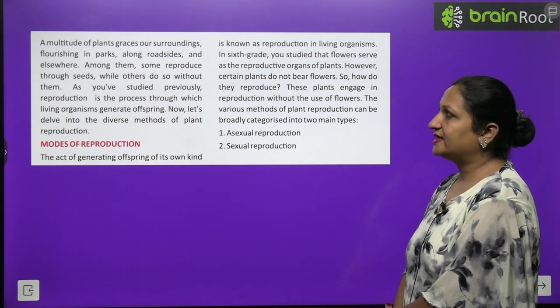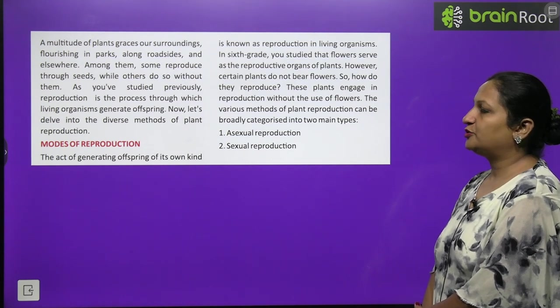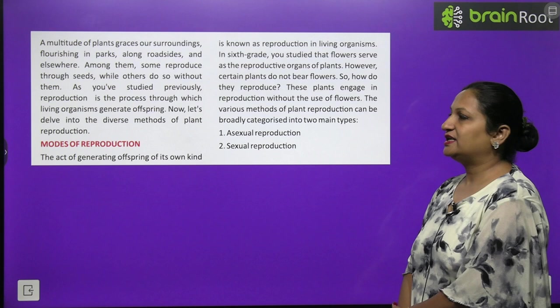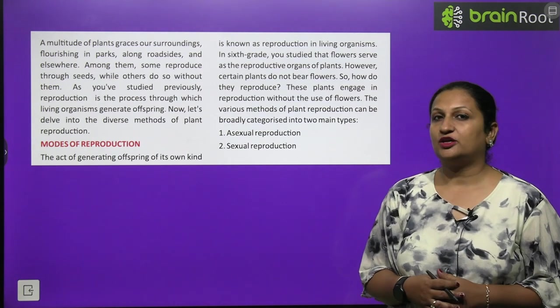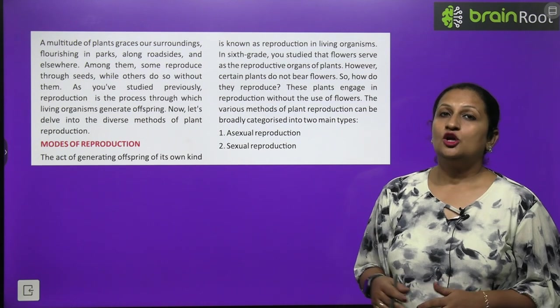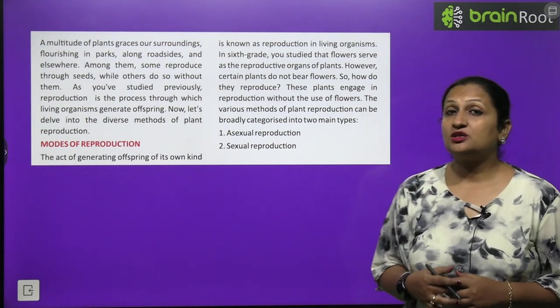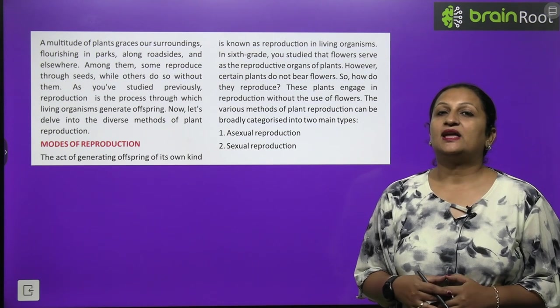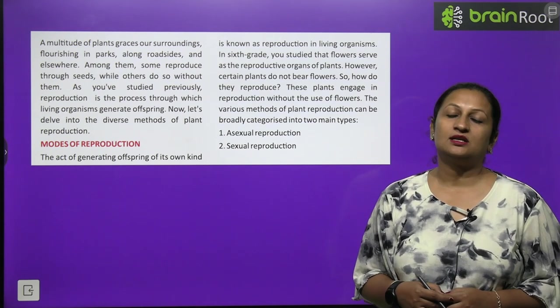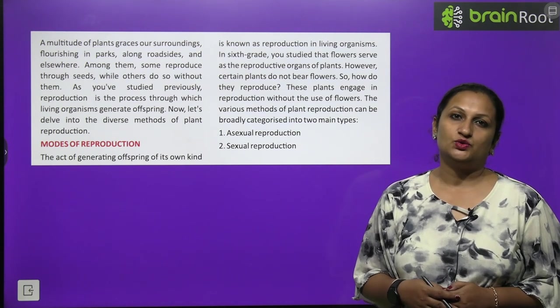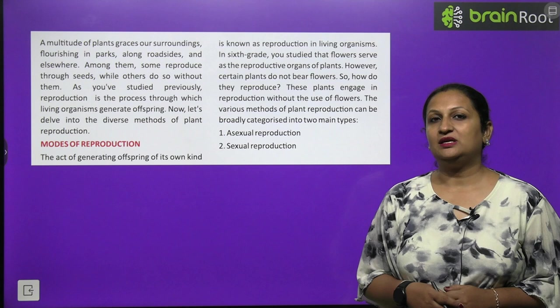A multitude of plant graces our surrounding, flourishing in parks, along roadsides and elsewhere. Among them, some reproduce through seeds while others do so without them. As you have studied previously, reproduction is the process through which living organisms generate offsprings. Now let's discuss into the diverse method of plant reproduction. Modes of reproduction are two types: one is asexual reproduction and one will be sexual reproduction.